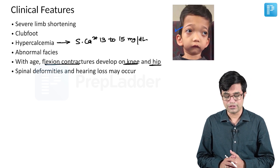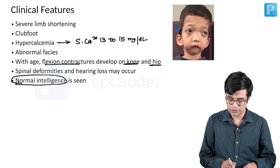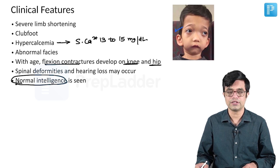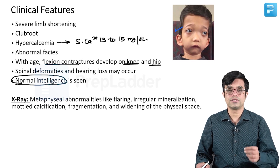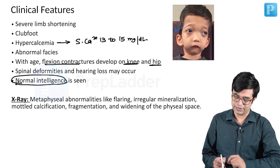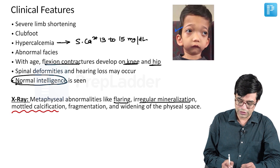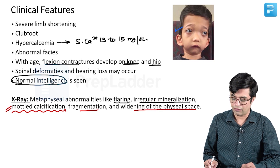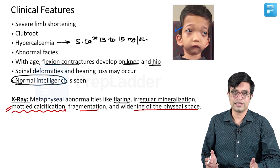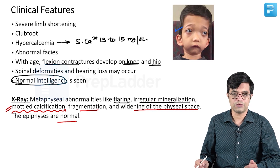Spinal deformities and hearing loss may also be seen. They have normal intelligence and some of them are actually very bright — so this is also a group of conditions where there is normal intelligence. X-ray will show metaphysial abnormalities — which is why we call it metaphysial dysplasia. Features include metaphysial flaring, irregular mineralization, mottled calcification, fragmentation and widening of the growth plate (the physeal plate space). The epiphyses are found to be normal in these individuals.